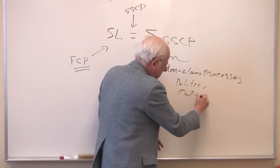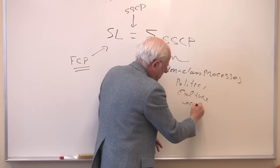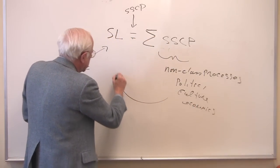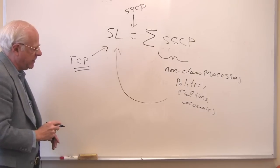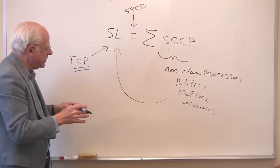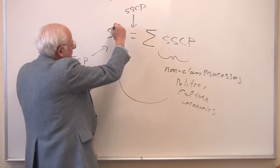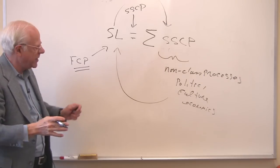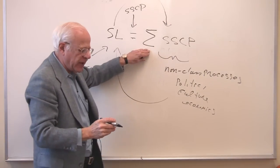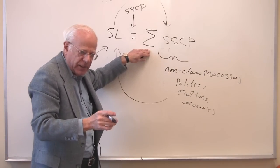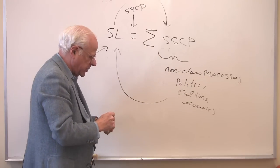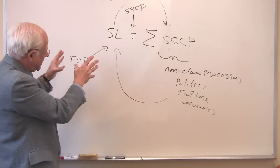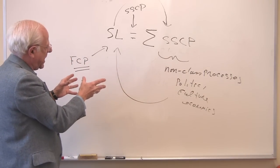The subsumed classes produce and disseminate non-class processes: politics, culture, economics — that is, economics other than class — which provide the conditions of existence of the left-hand side, the fundamental class process. That's the logic of overdetermination. But of course, the left-hand side also supplies the conditions of existence of the right-hand side. Each side of the equation is both cause and effect — each overdetermines the other. We're deploying the logic we learned about the dialectic or overdetermination to understand this class theory of society.